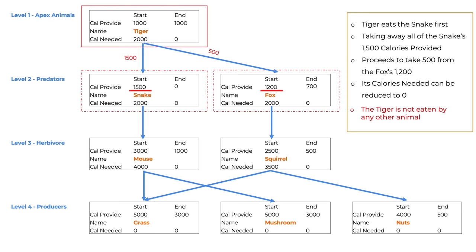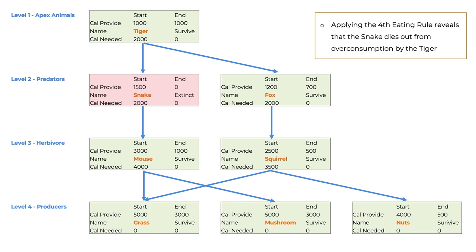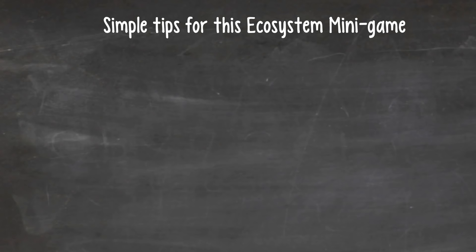It eats the snake first, taking away all of the snake's 1,500 calories provided, then proceeds to take 500 from the fox's 1,200, so that its calories needed can be reduced to zero. The tiger is not eaten by any other animal. Applying the fourth eating rule reveals that the snake dies out from overconsumption by the tiger. In a real PSG session, you will need to find a replacement for the snake, which often requires you to change a few other species as well. Sometimes you may change the whole ecosystem, if time allows. Otherwise, you have to submit a sub-optimal ecosystem, which will surely compromise your chances. For the scope of this video, without overcomplicating things, let me share with you some simple tips for this ecosystem mini-game.